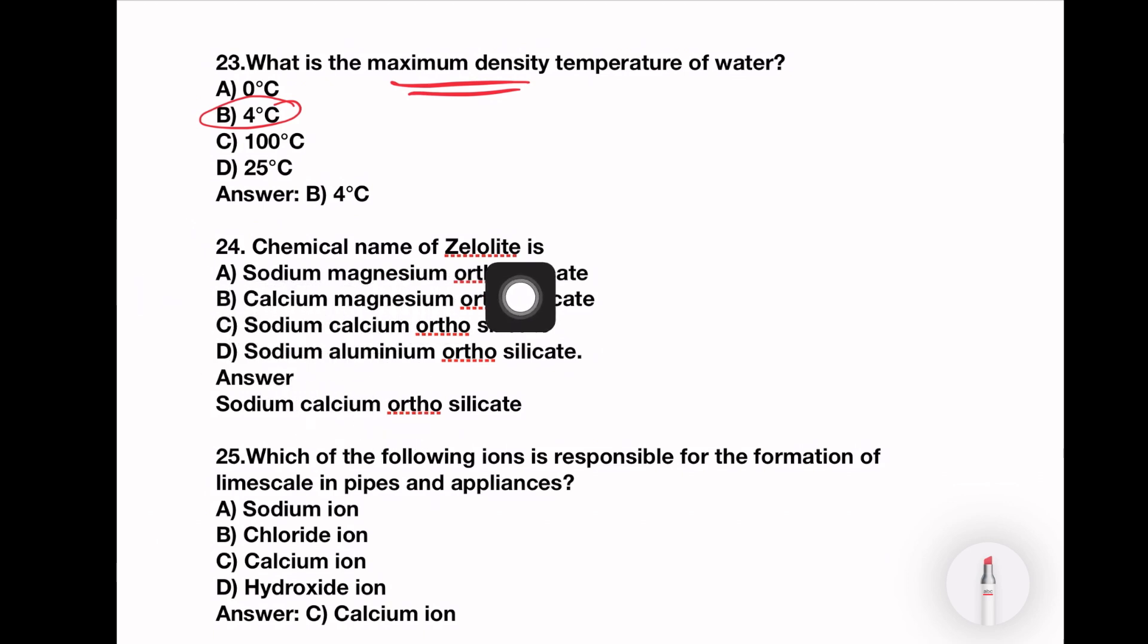Next, chemical formula of zeolite is sodium magnesium orthosilicate, calcium magnesium orthosilicate, sodium calcium orthosilicate, or sodium aluminum orthosilicate. The answer is sodium aluminum orthosilicate. Right answer is option number C.